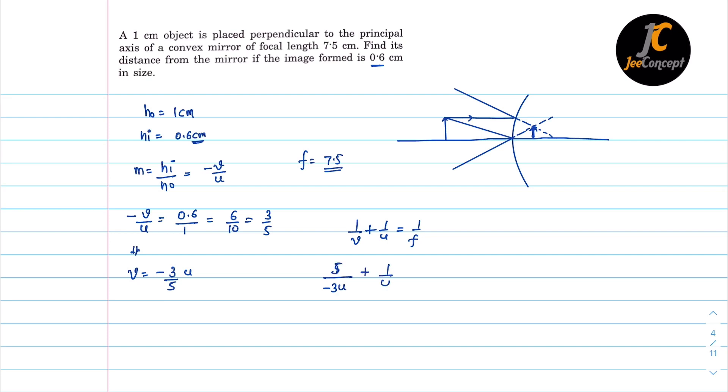1 by u is equal to 1 by 7.5, so 75 into 10. Now calculate, this will become 1 by u common. This will become 5 by, let's see, minus 5 by 3 plus 1 is equal to 2 by 15.